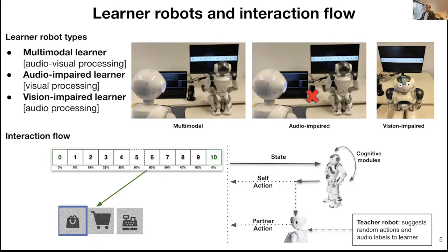To describe the interaction flow in this setting: the learner robot perceives visual data after selecting one of the states. Then it employs cognitive modules to decide where it should perform an action, either based on its own Q matrix or based on the teacher robot's suggestion. Note that the learner robot asks for help from the teacher when its own action leads to higher computational energy consumption. The role of the teacher robot is to provide randomly generated actions and audio labels.